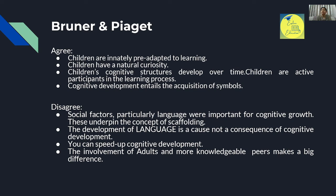According to Bruner, the development of language is a cause, not a consequence, of cognitive development — language development causes cognitive development. This is a key distinction. Importantly, Bruner says you can speed up cognitive development — through approaches like the spiral curriculum, you can accelerate learning. This is different from Piaget, who says you cannot speed up development.